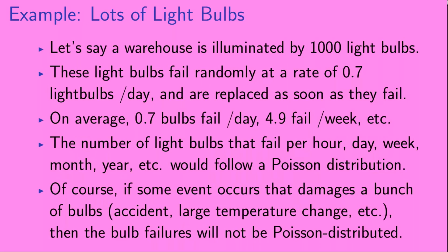Let's look at another example. A warehouse is illuminated by 1,000 light bulbs. These light bulbs fail randomly at a rate of 0.7 light bulbs per day, and are replaced as soon as they fail. On average, 0.7 bulbs fail per day, 4.9 fail per week, etc. The number of light bulbs that fail per hour, per day, per week, per month, per year, etc., would follow a Poisson distribution. Of course, if some event damages a bunch of light bulbs — for example, an accident or a large temperature change — then the bulb failures will no longer be Poisson distributed.